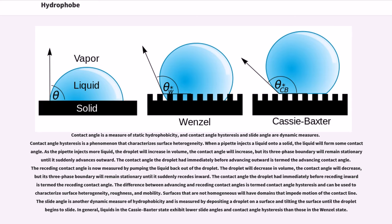When a pipette injects a liquid onto a solid, the liquid will form some contact angle. As the pipette injects more liquid, the droplet will increase in volume, the contact angle will increase, but its three-phase boundary will remain stationary until it suddenly advances outward. The contact angle the droplet had immediately before advancing is termed the advancing contact angle.